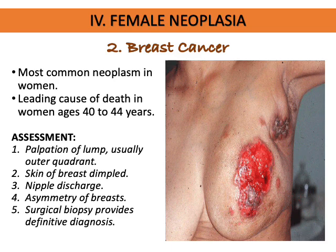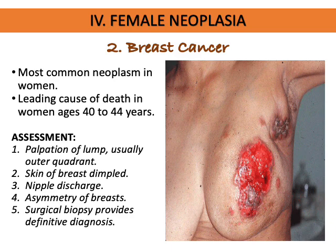Surgical biopsy will reveal the definitive diagnosis. Tumor markers include glycoprotein CA125, CA15-3, and carcinoembryonic antigen (CEA). Women at higher risk for developing breast cancer include nulligravidas, those with a personal or family history of breast cancer in a parent or immediate relative, and those with usual exposure to carcinogens.